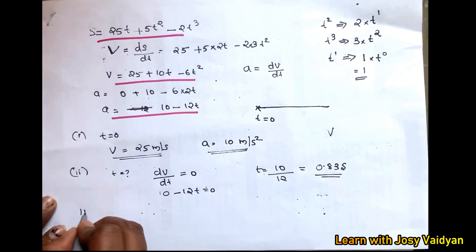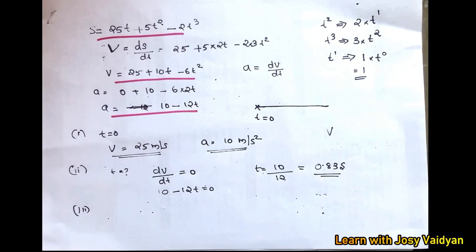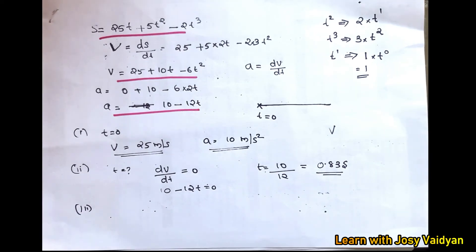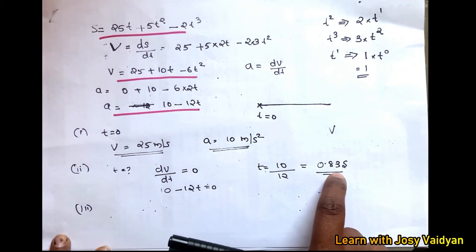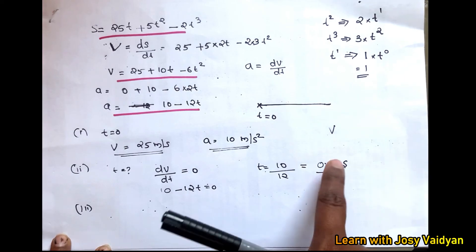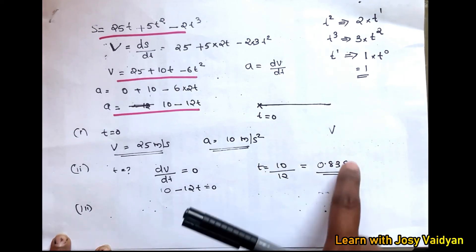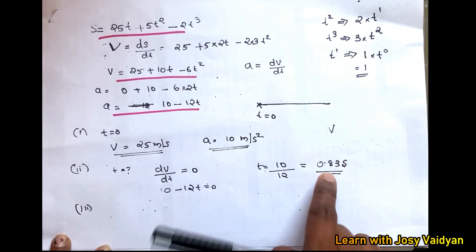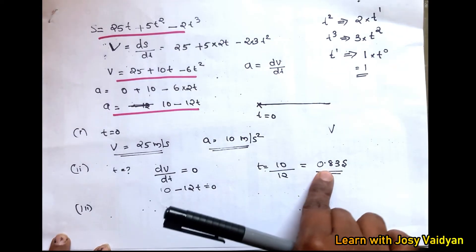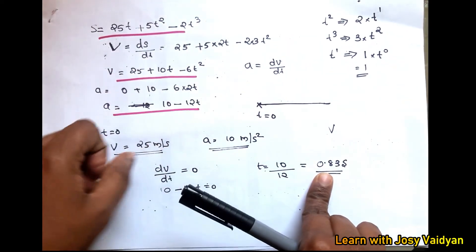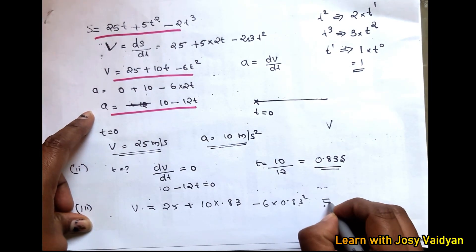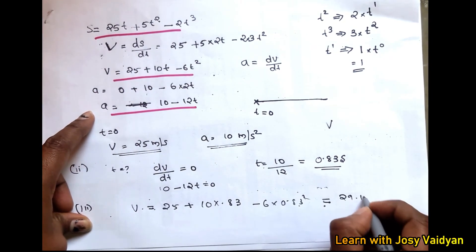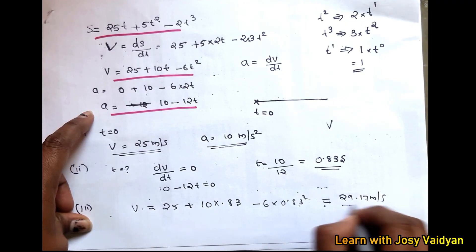For the third question — the maximum velocity of the particle — we substitute t = 0.83 seconds into the velocity equation. This gives a maximum velocity of 29.17 meters per second.